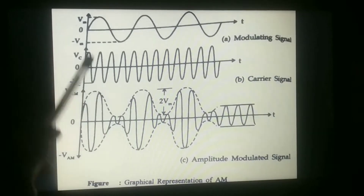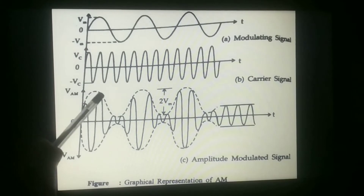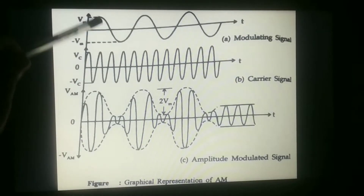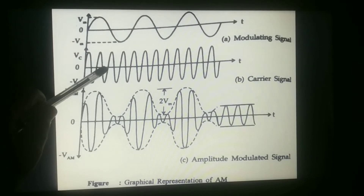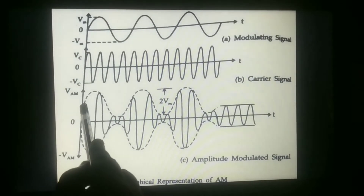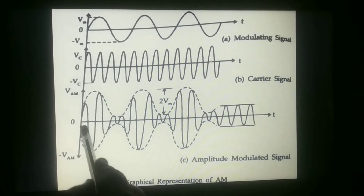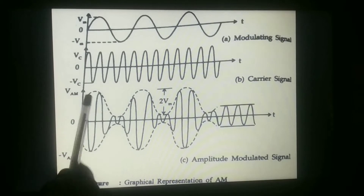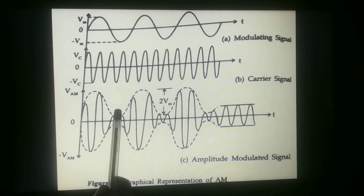The frequency of the carrier is constant. The amplitude of the carrier is varied with respect to the modulating signal. In the AM output signal, this is the new amplitude of the carrier signal, because this amplitude is varied with respect to the modulating signal. Here, this is the maximum voltage Vmax and this is the minimum voltage Vmin.